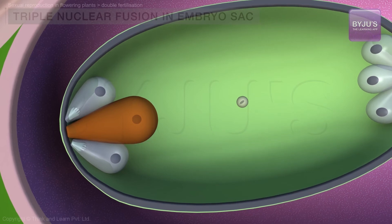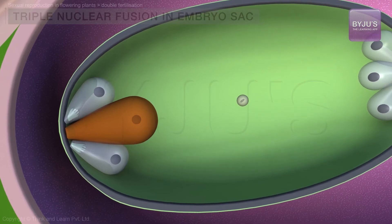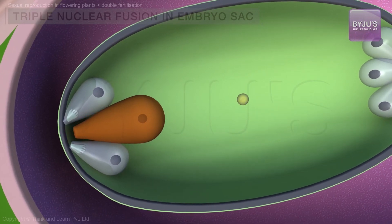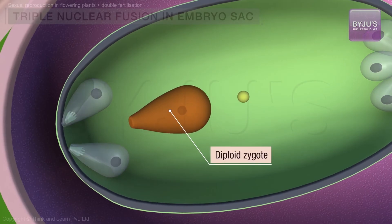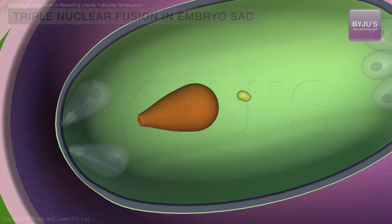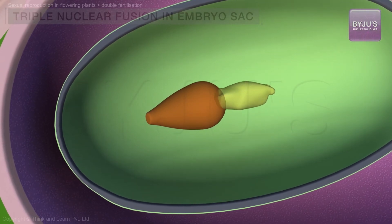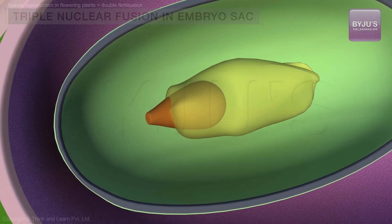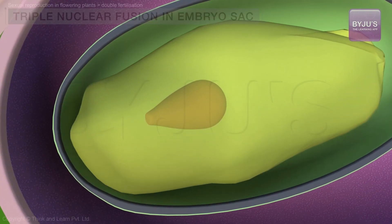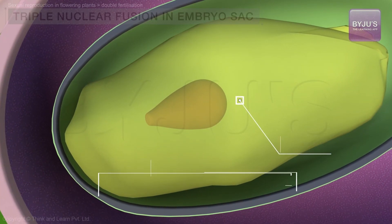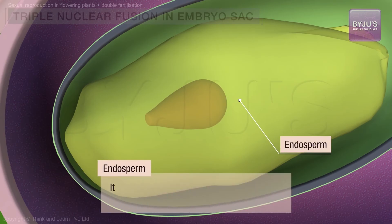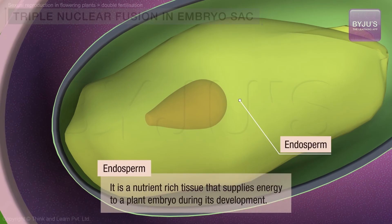Fertilization in flowering plants accomplishes two things. One, it creates a diploid zygote, which develops into an embryo. And two, it creates a triploid cell — that is the PEN — which eventually develops into endosperm, a nutrient-rich tissue that supplies energy to a plant embryo during its development.